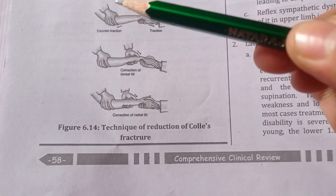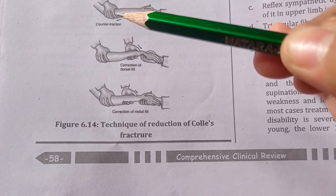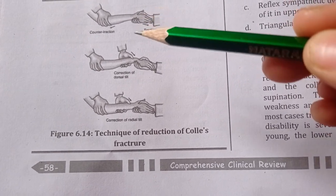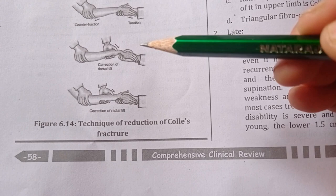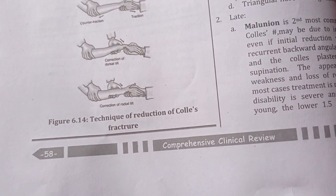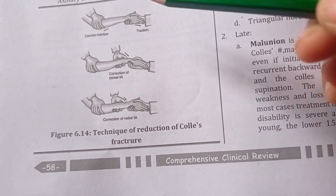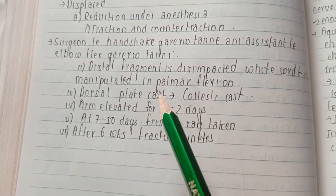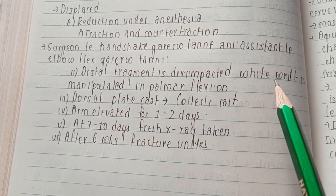The assistant surgeon flexes the elbow and pulls from here, while the surgeon does a handshake with the patient's hand and pulls the wrist. In this method the fracture can be reduced, then the distal fragment is impacted.